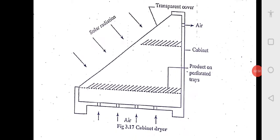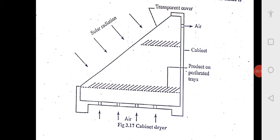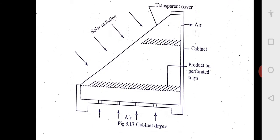It is a very simple device, like a cabinet dryer. You have got two trays. On these trays, there are holes, you can see the dashed line and hatched line. So there are holes so that air can move out. That is why it is called perforated trays. Product on perforated trays.